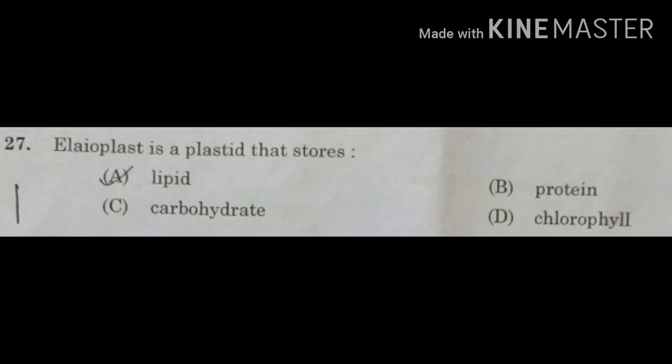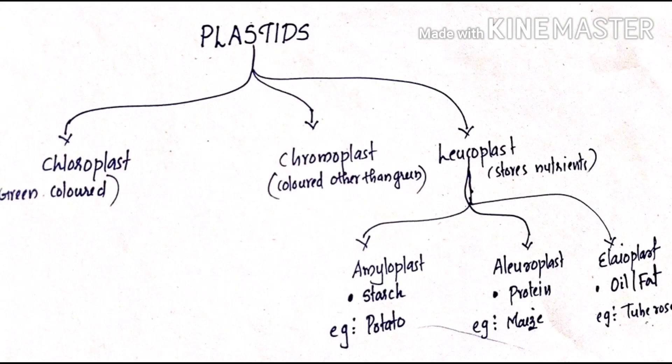The next question is: lioplasty is a plastid that stores — option A: lipid, option B: protein, option C: carbohydrate, option D: chlorophyll. Let us discuss some important points regarding plastids. Plastids are double membrane-bound cell organelles commonly found in plants which either store pigment or nutrients. Plastids can be classified into three types: chloroplast, chromoplast, and leucoplast.